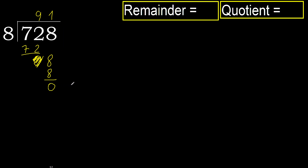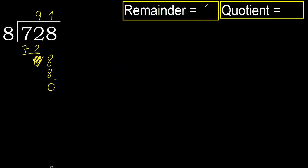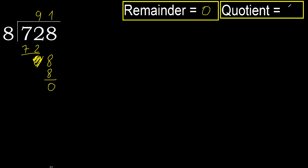There is no number remaining, therefore finish. 728 divided by 8 is the result shown here.